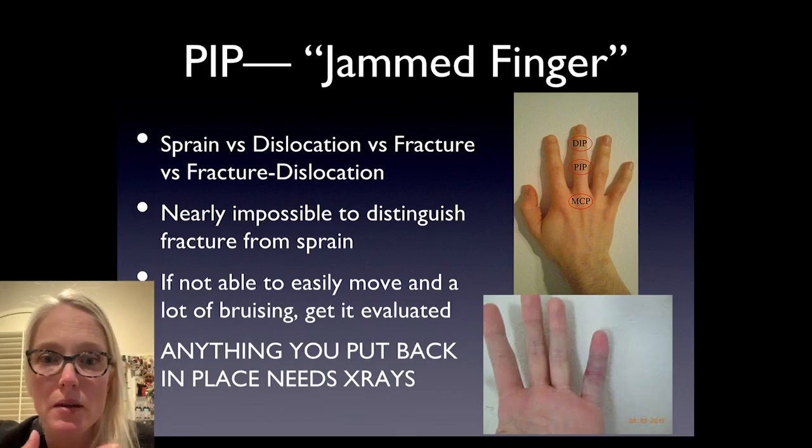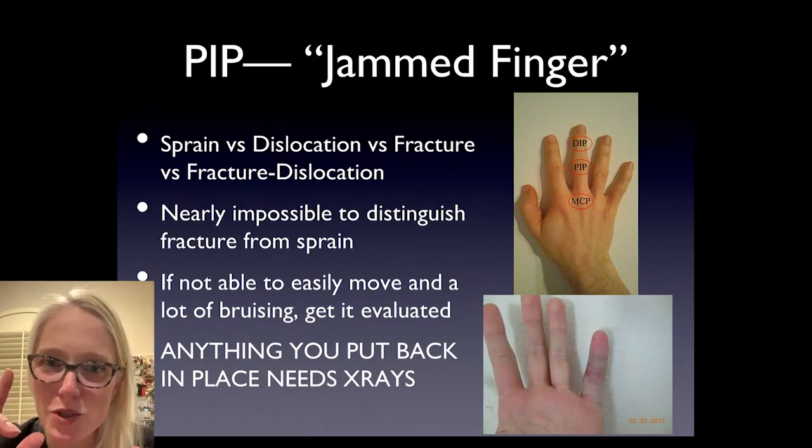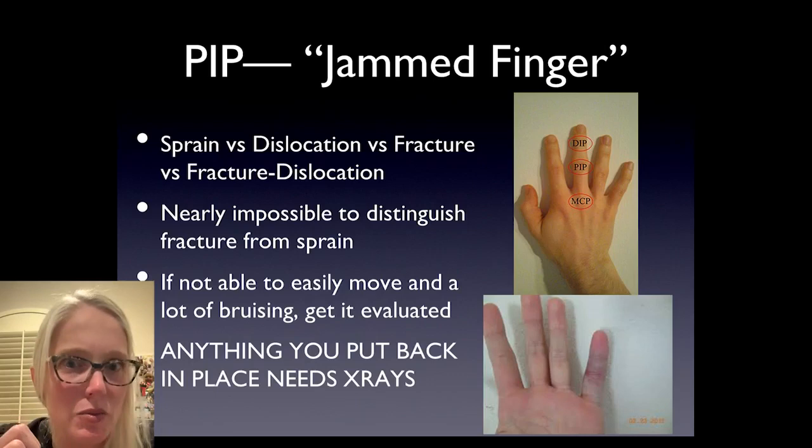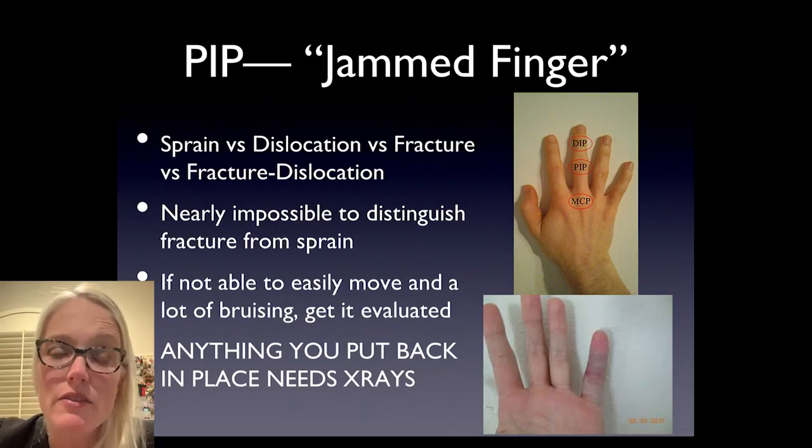It's worth spending time on the PIP — the middle knuckle. This is the most commonly injured knuckle and is your classic jammed finger. It is really hard, and sometimes impossible, to know just from looking at the finger whether it's a sprain or a fracture. If the patient isn't easily moving it and there's significant bruising, it's worth getting it checked out.